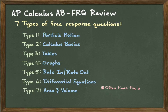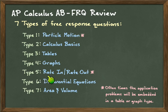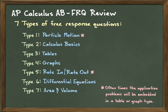One thing to note is that often the application problems — like rate in/rate out or particle motion — can be found in different representations. There are seven types of FRQs but only six questions on the AP exam, so these types will be intermixed. You might see a rate in/rate out problem given by a table, or a particle motion problem given by a table, or a rate in/rate out represented as a differential equation type of problem.